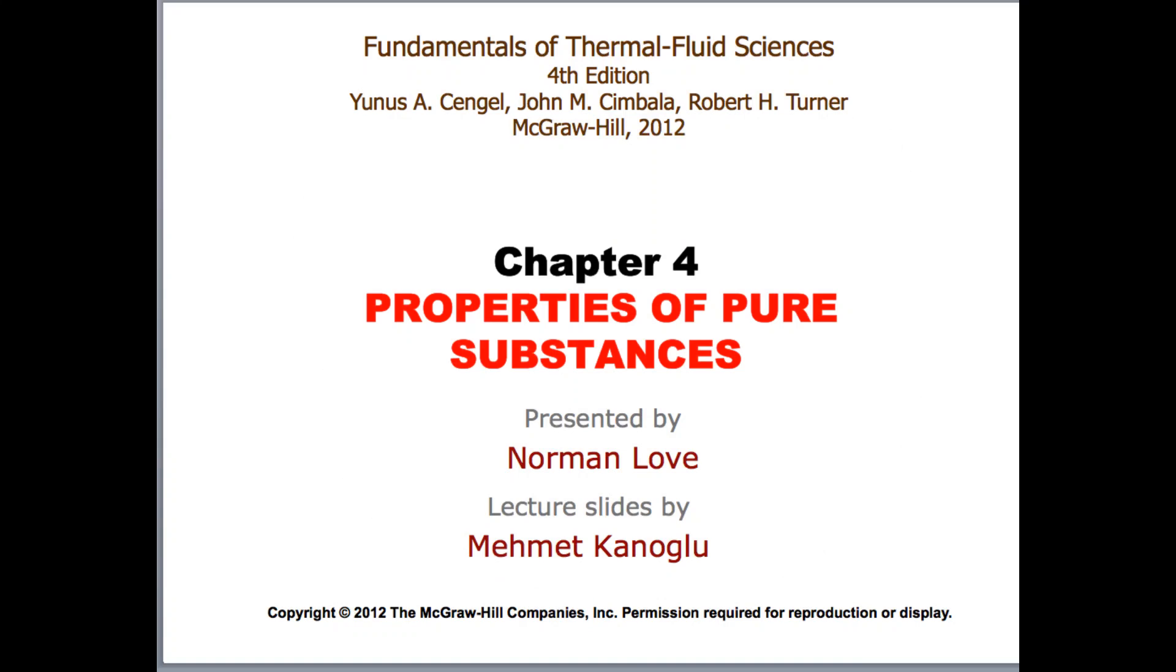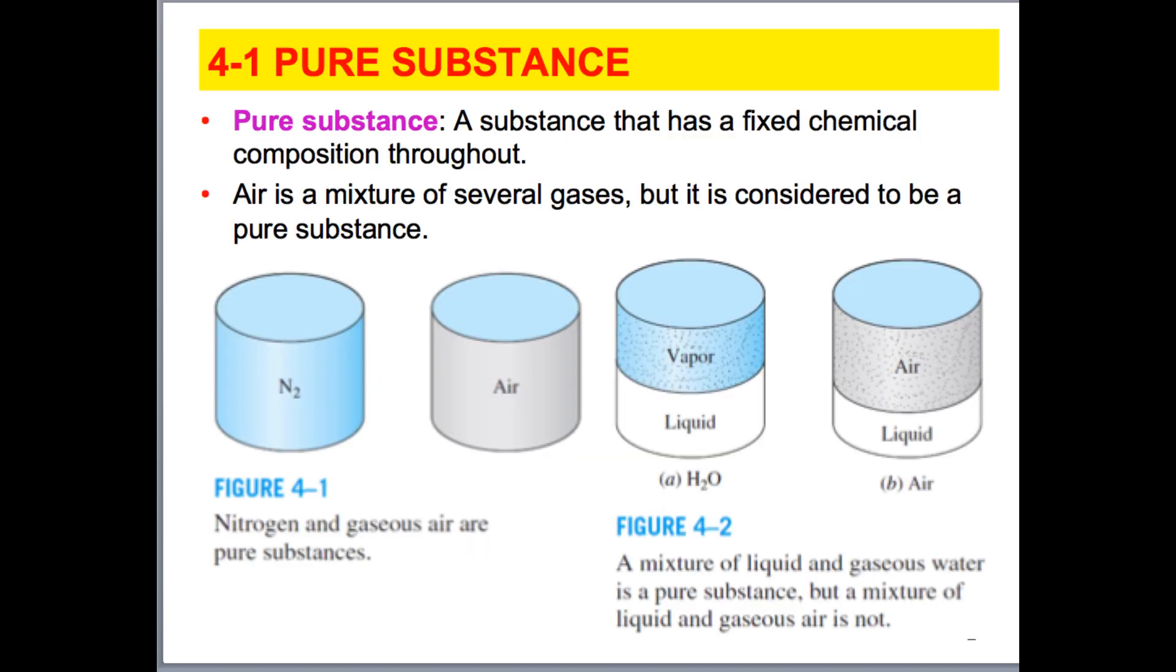Let's start our discussion about chapter 4, and we're going to be talking about properties of pure substances. So what is a pure substance? A pure substance is something that has a fixed chemical composition throughout.